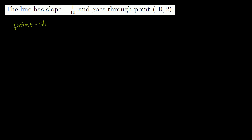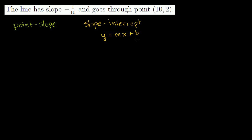Let's do some equations of lines in point-slope form. This is different from slope-intercept form, but they really are just two different ways of writing the same equation. Slope-intercept form has equations of the form y equals mx plus b, where m is the slope and b is the y-intercept. That's why it's called slope-intercept — you have the slope and the intercept.